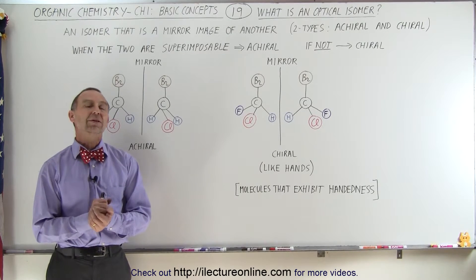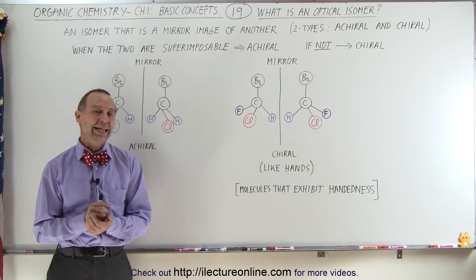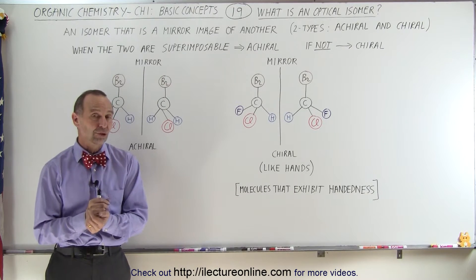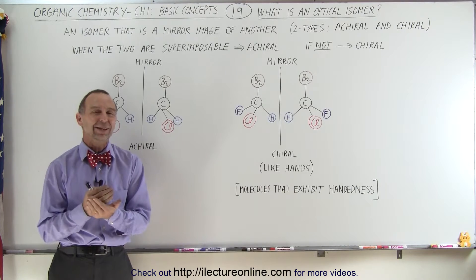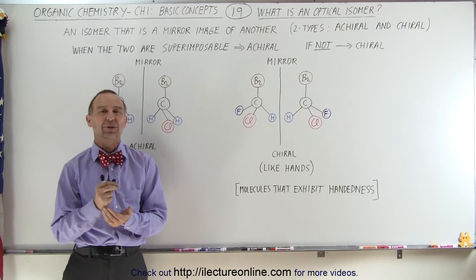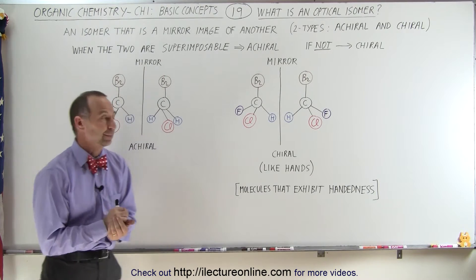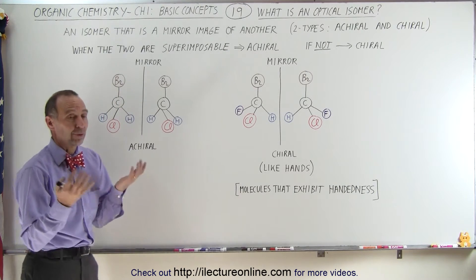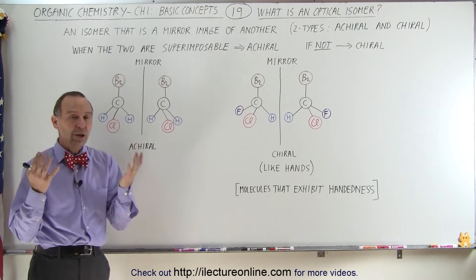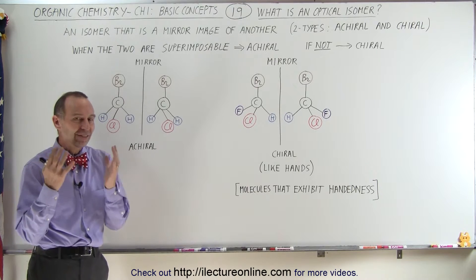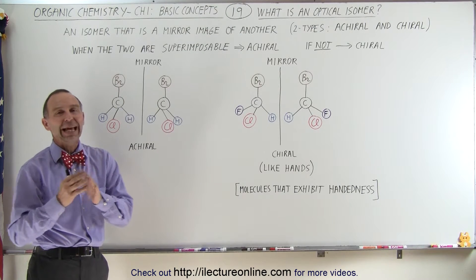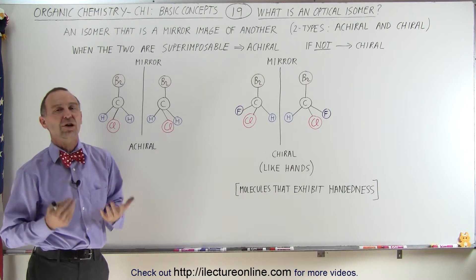Welcome to ElectronLine. In this video we're going to answer the question: what is an optical isomer? Isomers are molecules that have the same chemical formula, but that have a different structure.